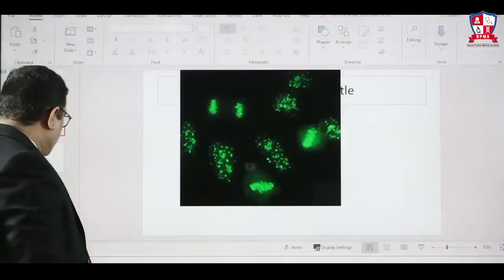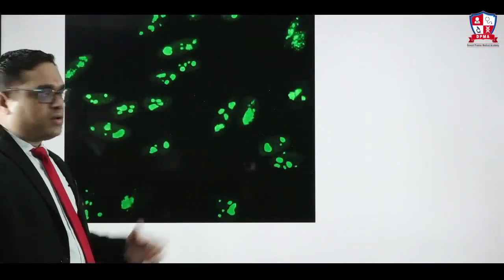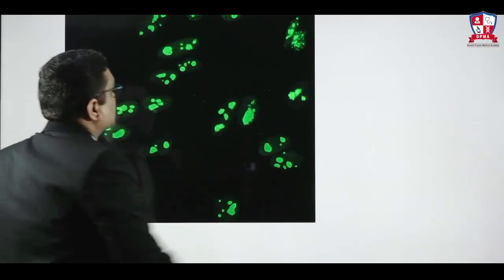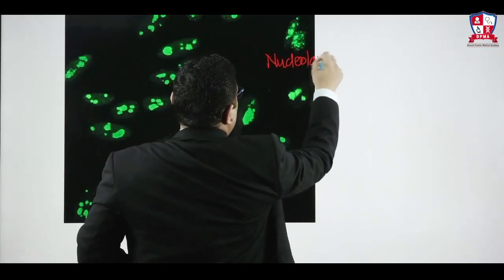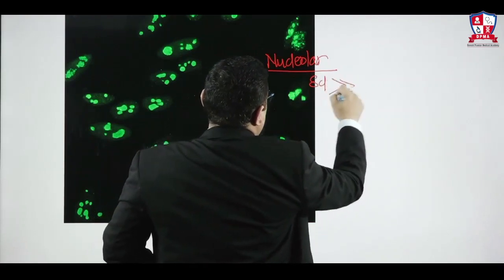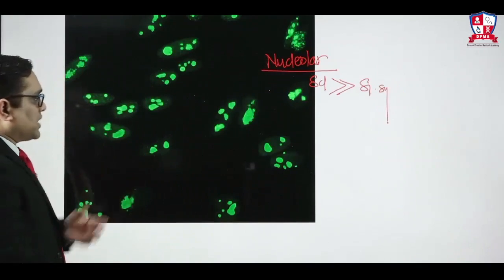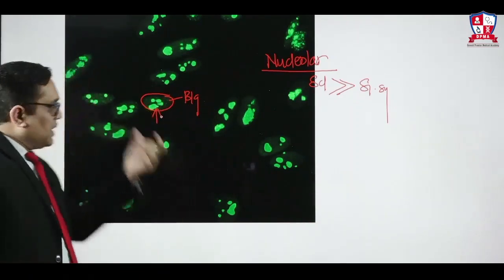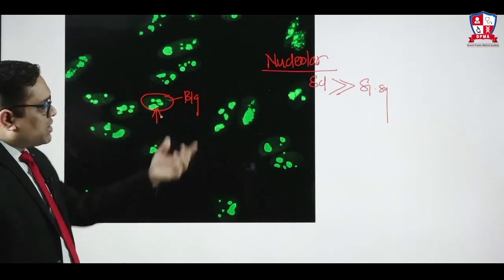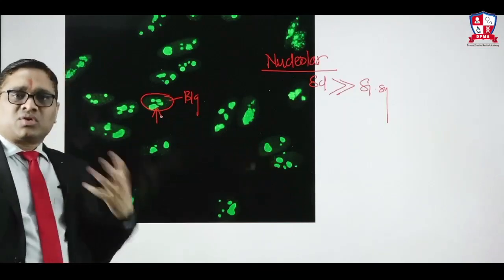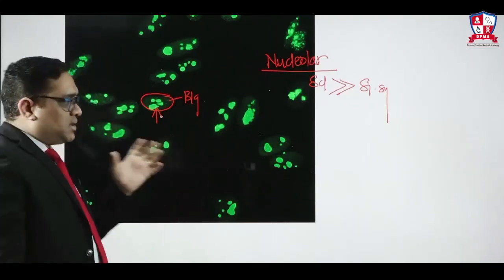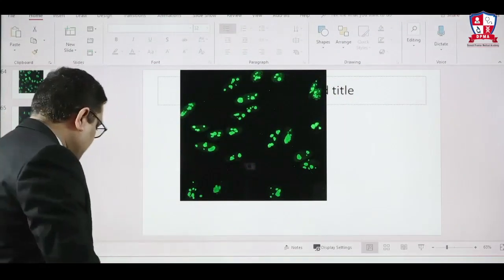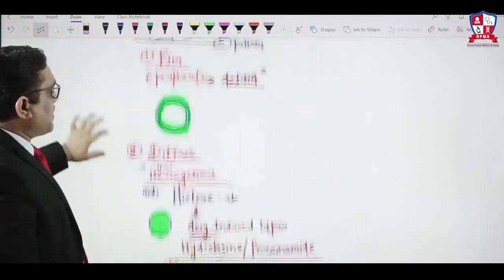Looking at the nucleolar immunofluorescence diagram: background is dark, green spots are well-defined, large, and few — you can count them 1, 2, 3, 4 per nucleus. This is nucleolar pattern of immunofluorescence, commonly seen in scleroderma. This can be a future exam question.